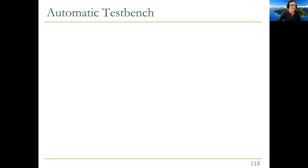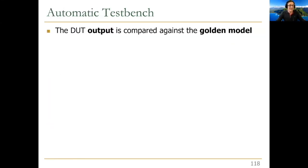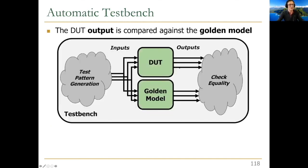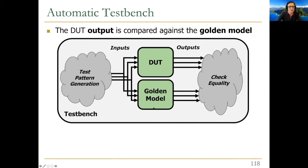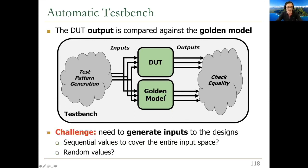With an automatic test bench, the design under test output is compared against the golden model. You simulate both in parallel, apply the same test patterns to both, and compare outputs. If outputs are equal, the design under test is golden. The test bench code becomes very simple — if Y from the DUT is not equal to the golden model's output at the negative clock edge, you flag an error. Output checking is fully automated, and you can even compare timing using a golden timing model.